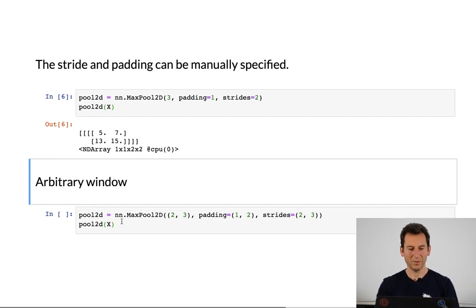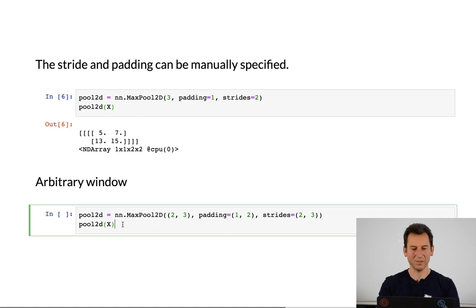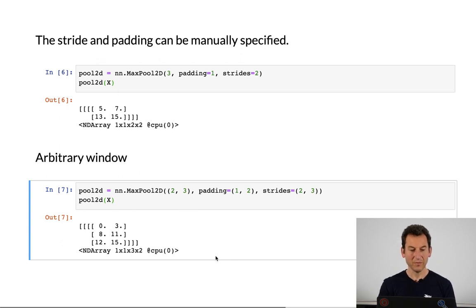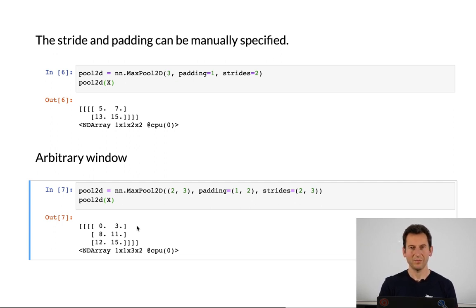I could have arbitrary windows with different widths, heights, padding, and strides — and I'll leave it to anyone to verify that the result would be a 3x2 matrix: three rows, two columns. So I can reshape the result in arbitrary ways. The number of input and output channels remains unchanged.